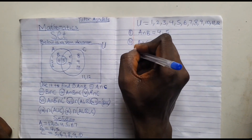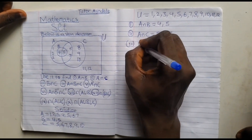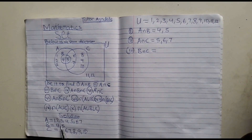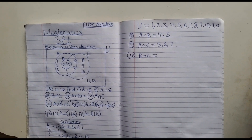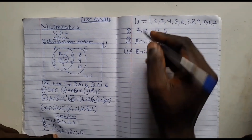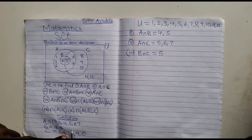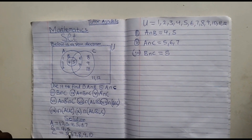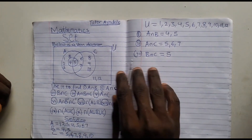Question three: B intersect C. What are those elements that are common in both B and C? We have 4 in B — is 4 in C? No. We have 5 in B — is 5 in C? Yes. So the only element common in both B and C is 5. That is our B intersect C = {5}.